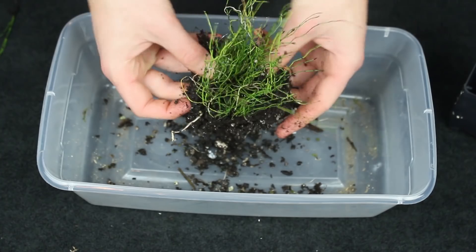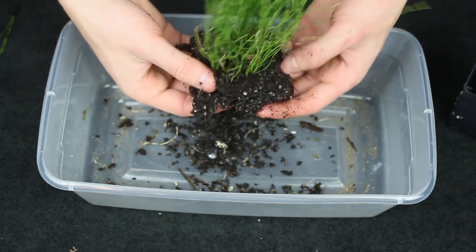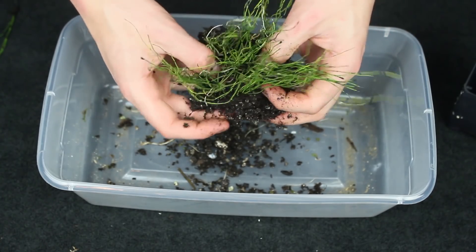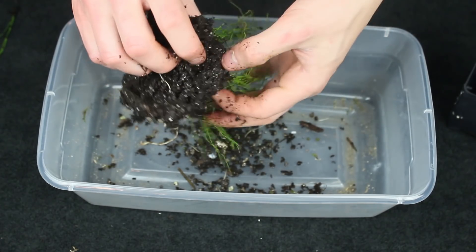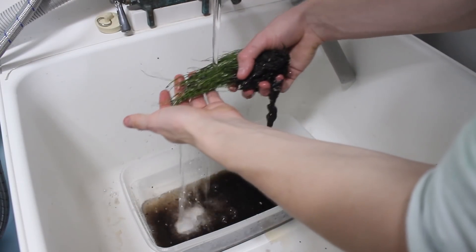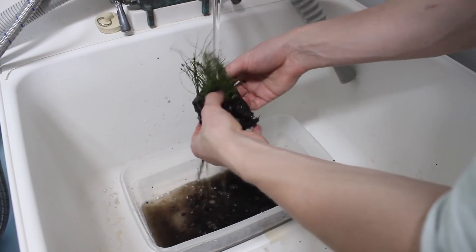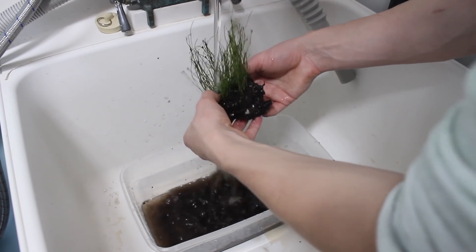Then I gently combed through the root structure so that the base of the plant would take up less space in the aquarium. From there I gave the plant a quick rinse in lukewarm water to remove excess debris and loosen the root structure even further.